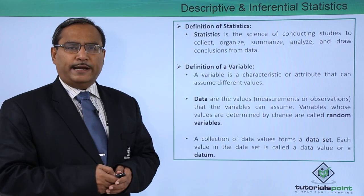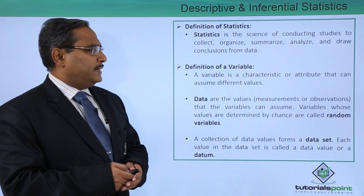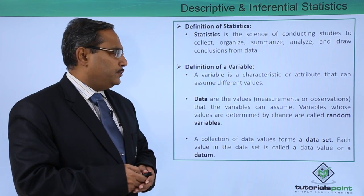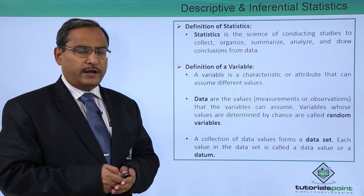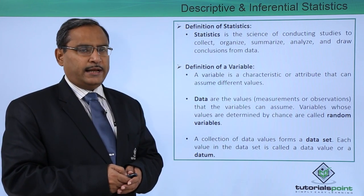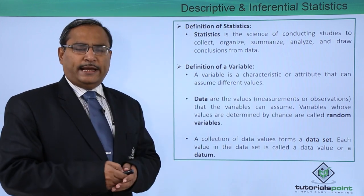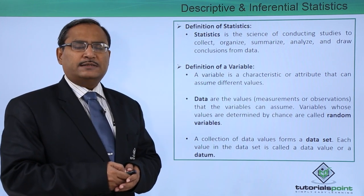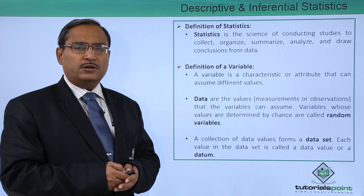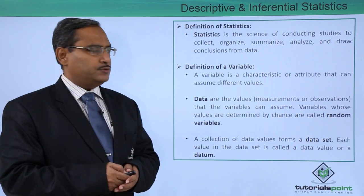A variable is a characteristic or attribute that can assume different values. For example, you can consider the age of a person. Age is a variable because it can assume different values.